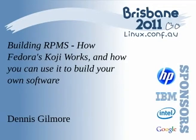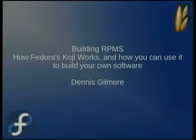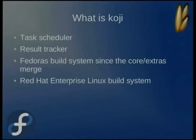I'm going to give you an overview of what Koji is. It's the build system that Fedora uses, how it works, and how you can use it to build your own software. Koji is a task scheduler and results gatherer. It's been the Fedora build system since the core and extras merge, and it's also used internally inside of Red Hat to build Red Hat Enterprise Linux, as well as by a whole bunch of other companies and people.